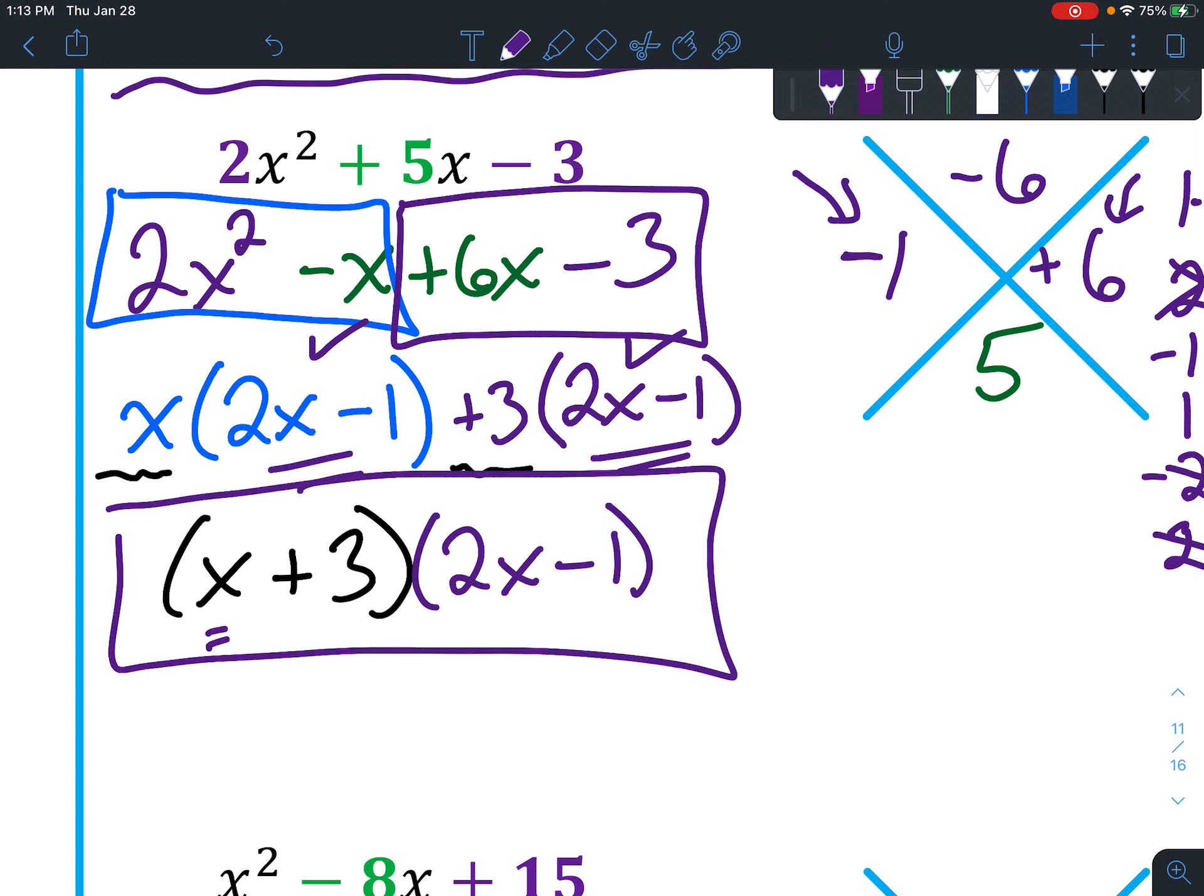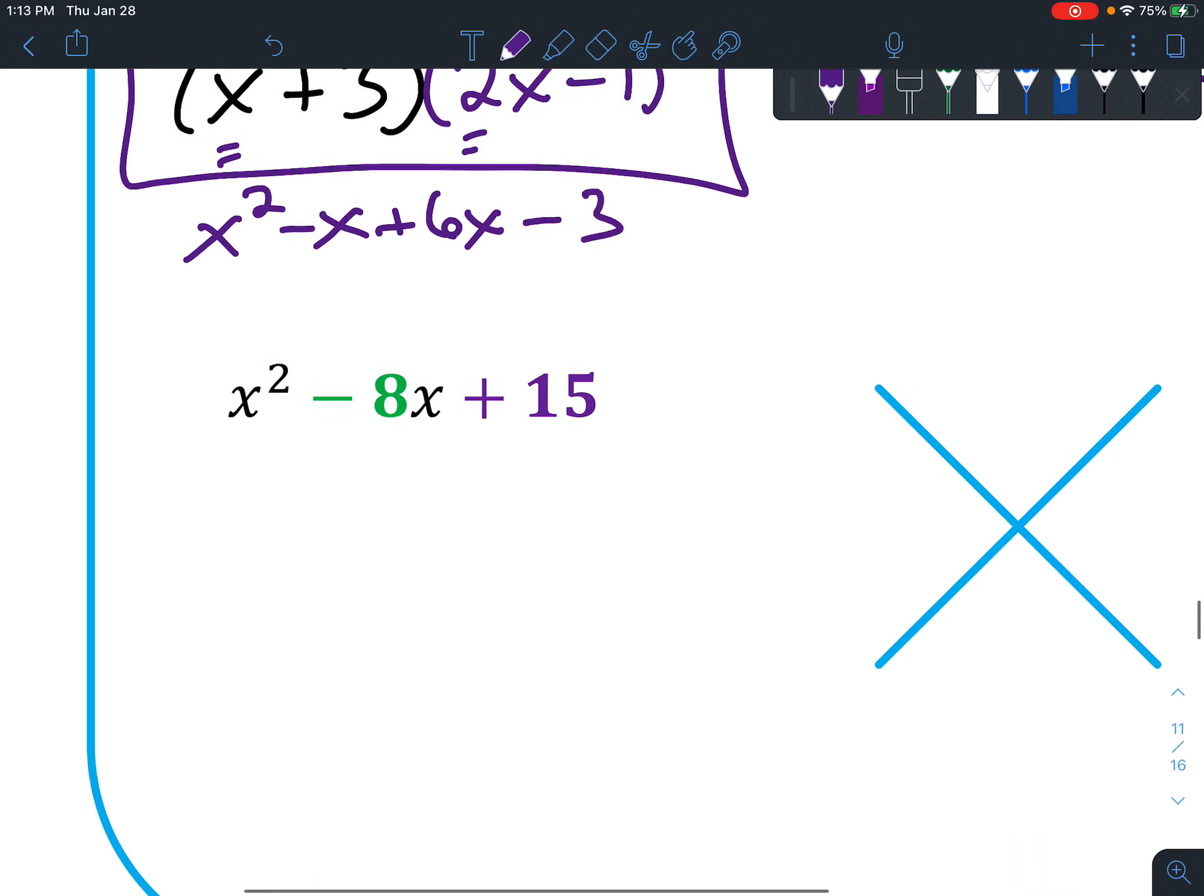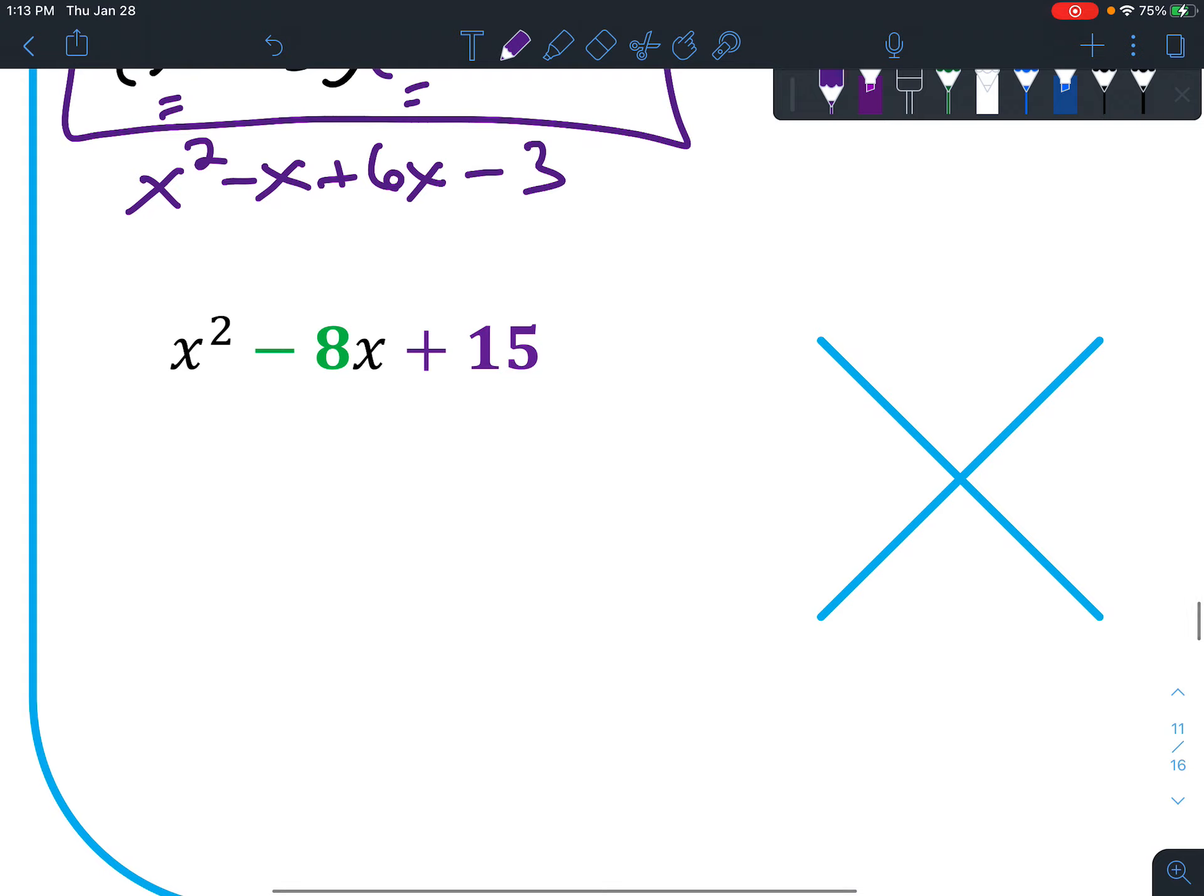And if you ever want to double check, the way you can double check is do the FOIL method. x times 2x is 2x squared, and x times negative 1 is negative x. Start with the 3: 3 times 2x is 6x, and then 3 times negative 1 is negative 3. When you combine those, you get what you started with.